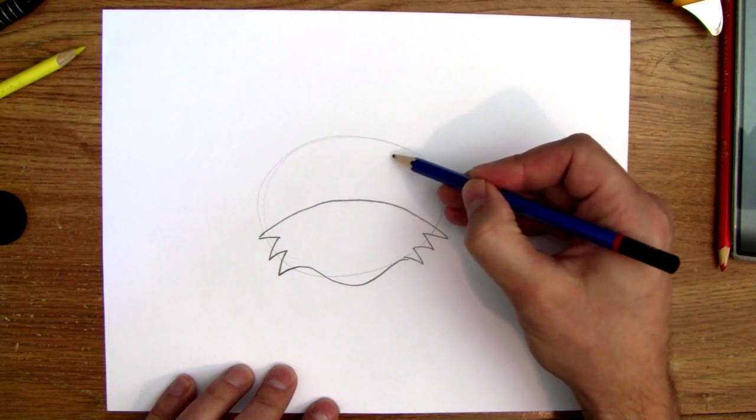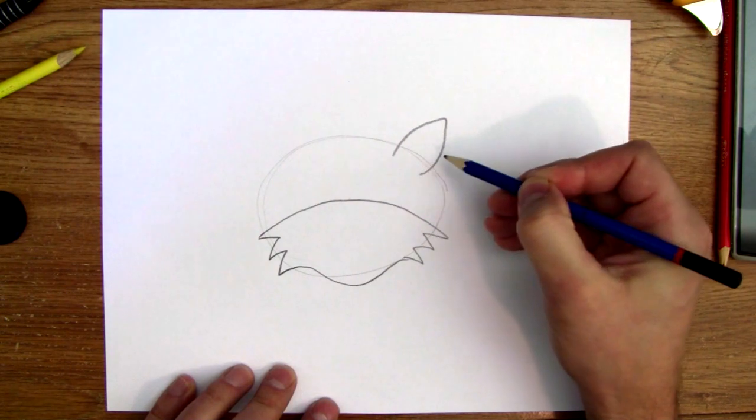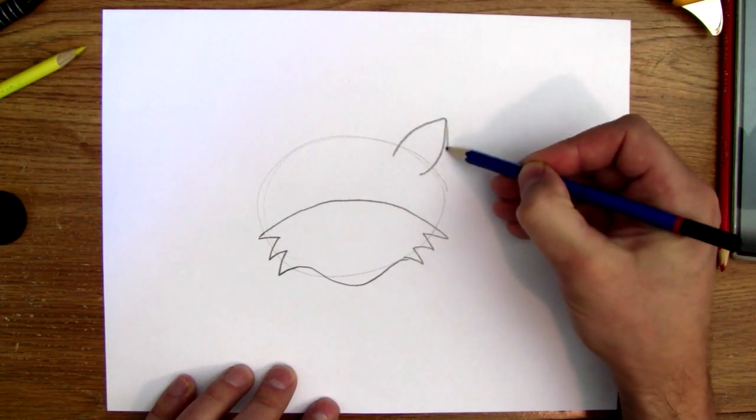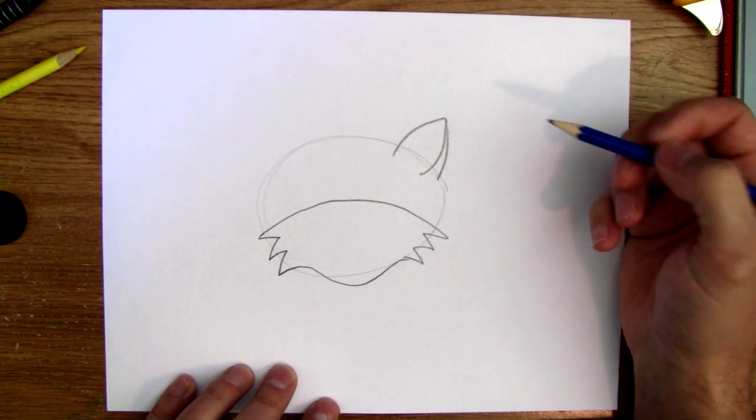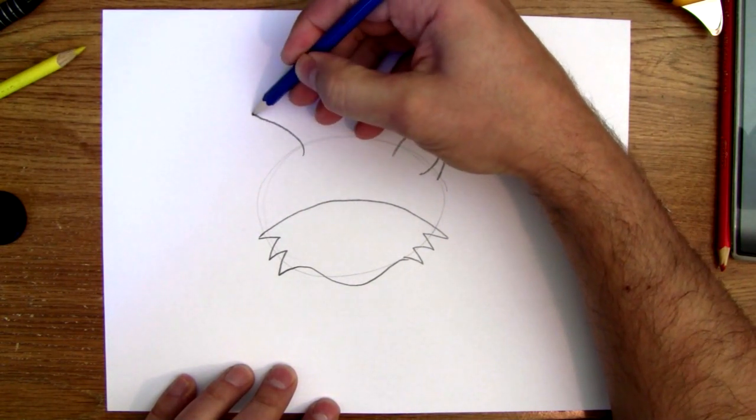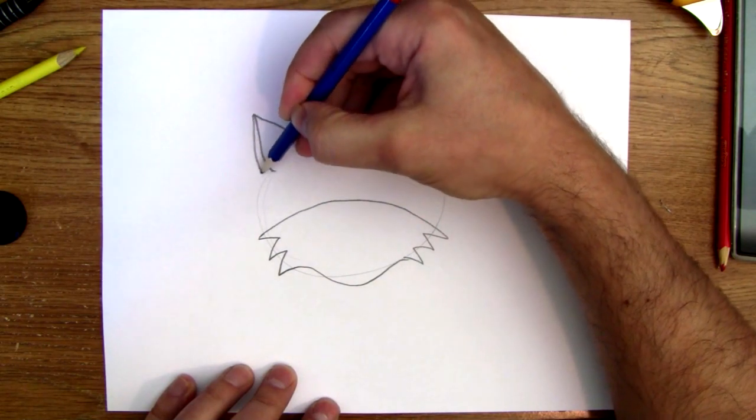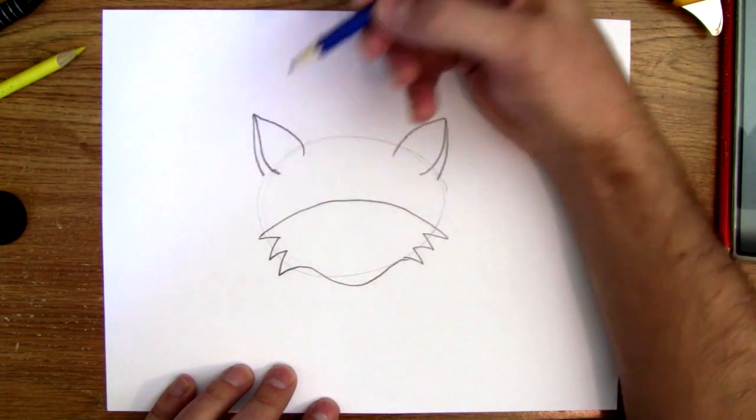We're gonna draw some ears like this, like this, and then there's the other side of the ear like that. And same on this side, like this, like this, and a little bit on the outside.